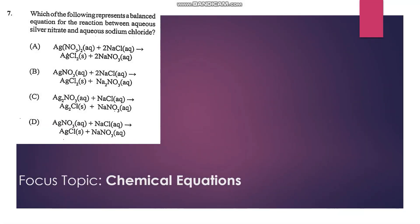Number 7: which of the following represents a balanced equation for the reaction between aqueous silver nitrate and aqueous sodium chloride? We know that in a chemical reaction, matter is conserved, so we should have an equal number of atoms on both sides of the equation, and the option with the balanced equation would be D.